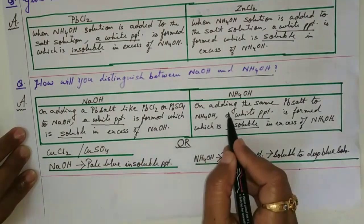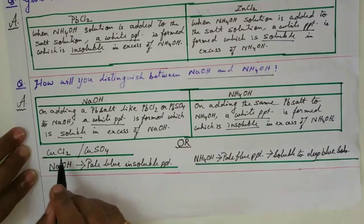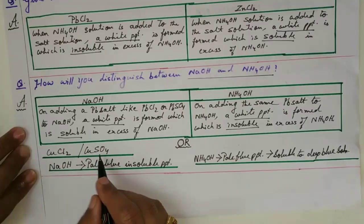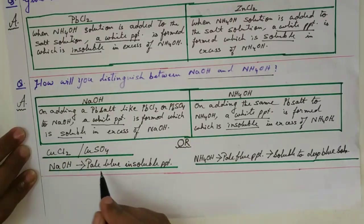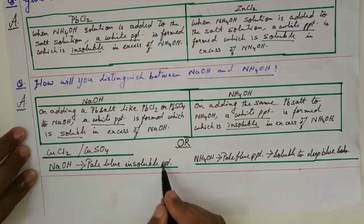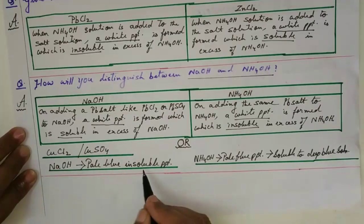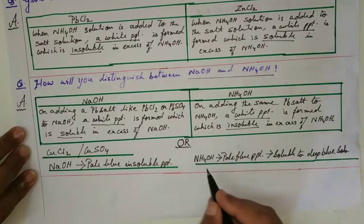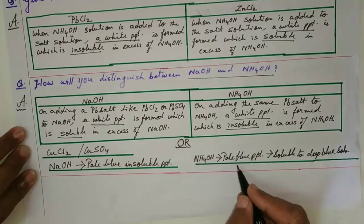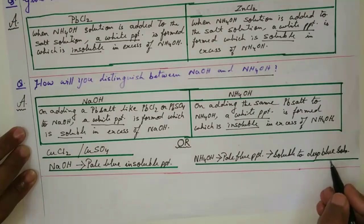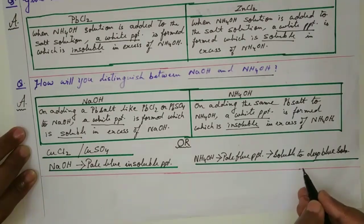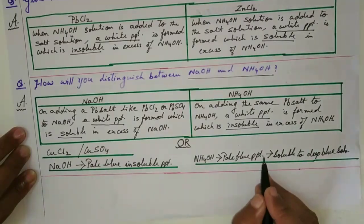You can write the same answer using a copper salt — copper chloride or copper sulfate. The copper salt with sodium hydroxide gives a pale blue insoluble precipitate, meaning it is not soluble in excess of sodium hydroxide. Whereas with ammonium hydroxide, the same copper salt initially gives a pale blue precipitate which dissolves to give a deep blue solution. This is how you distinguish between sodium hydroxide and ammonium hydroxide.